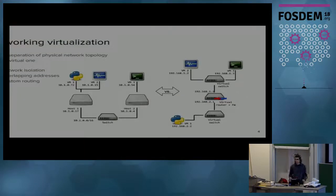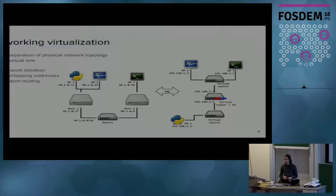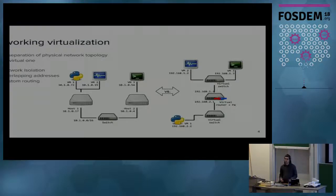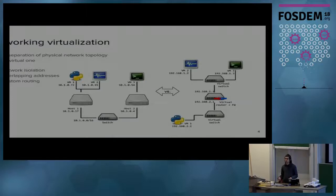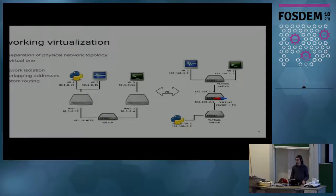SDN allows us to do network virtualization, which is sort of like regular virtualization: we have physical machines and virtual machines, and we can have several VMs on a single physical host. Network virtualization allows us to do just that — we have our data center with a single physical network connecting all machines, but we create an illusion for the VMs that they are in different networks, maybe different addresses. Maybe two VMs on different hosts appear directly connected. SDN creates this illusion and shows VMs or containers a virtual topology instead of the physical one.